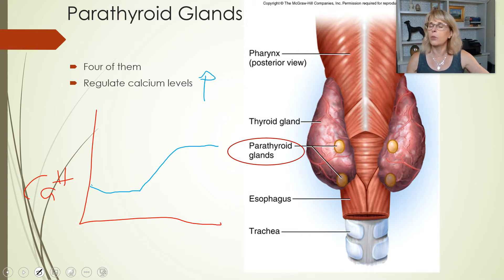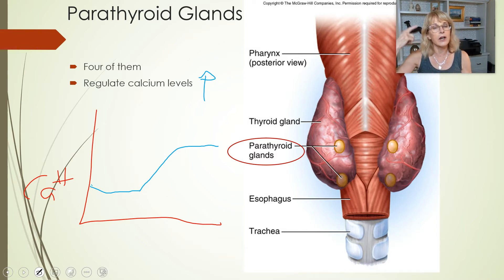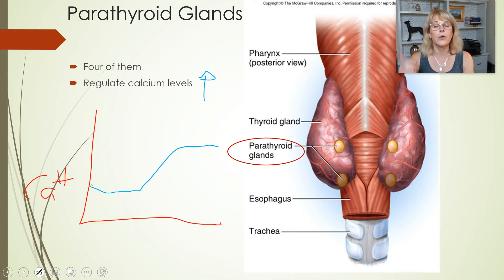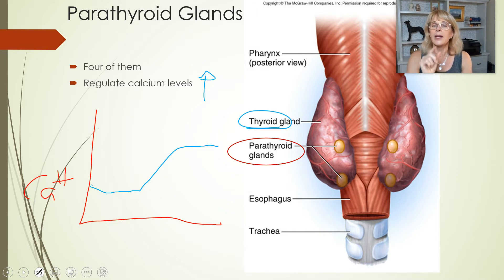If I ask you what will cause parathyroid hormone to be released, you would just say: when calcium levels are too low. Once you master the idea of homeostasis, some of these things just make sense. If insulin makes your blood sugar levels go down, then when is insulin released? When blood sugar is too high. Now, what is the opposite of parathyroid hormone? Calcitonin. Calcitonin is made by the thyroid gland and it will cause calcium levels to go down when they are too high.